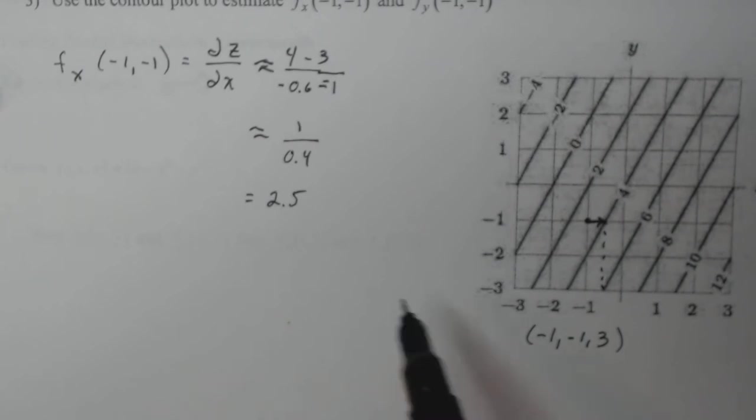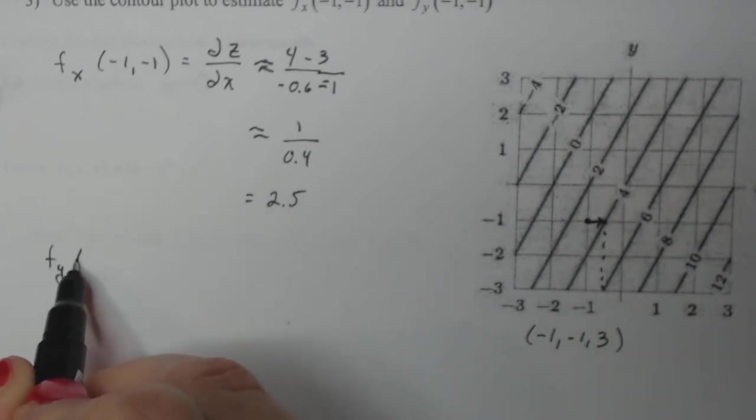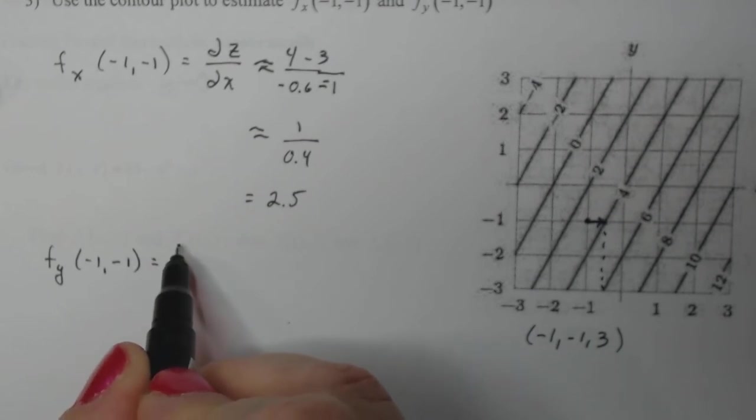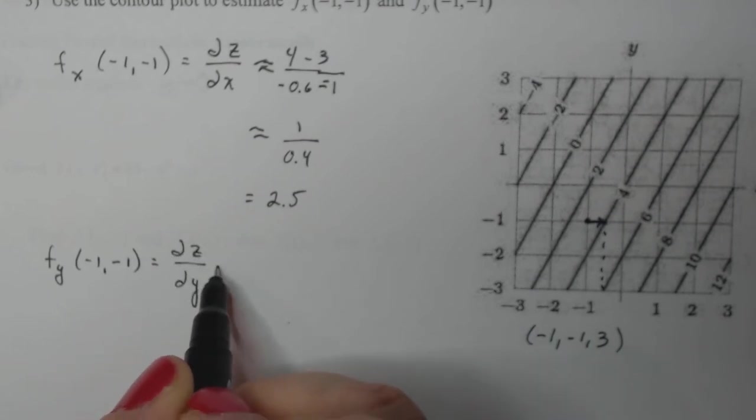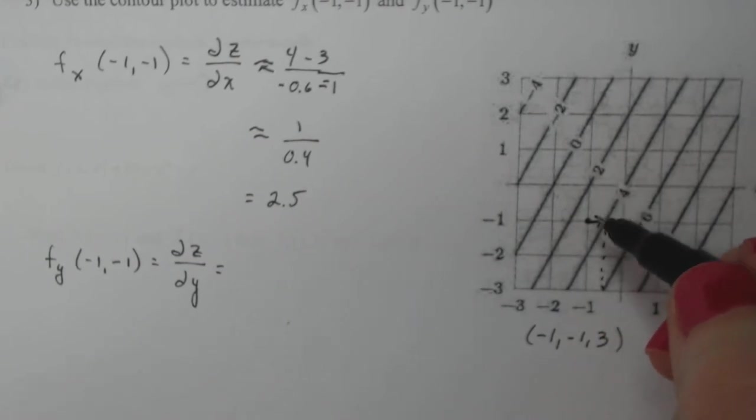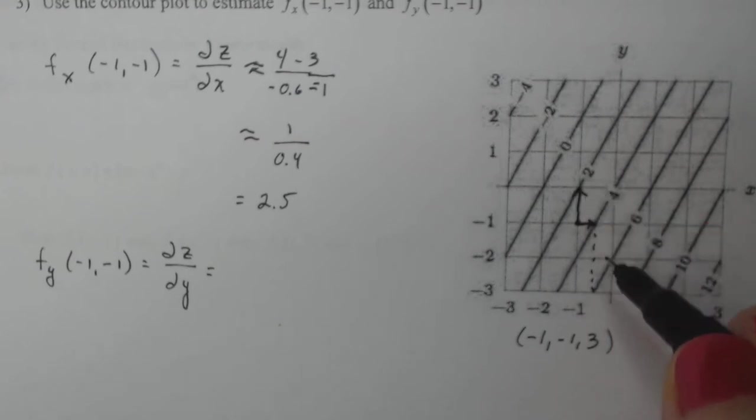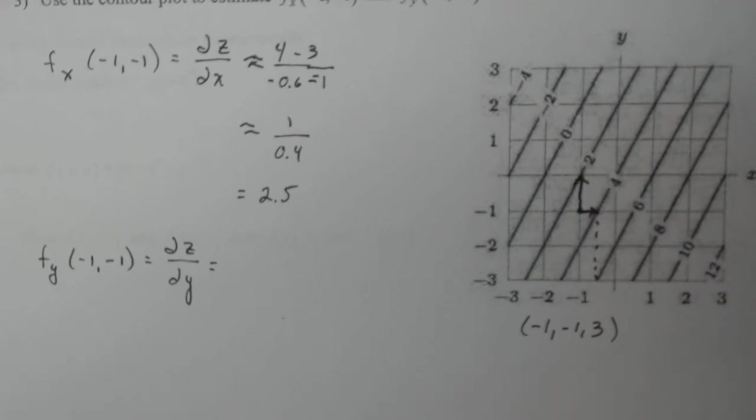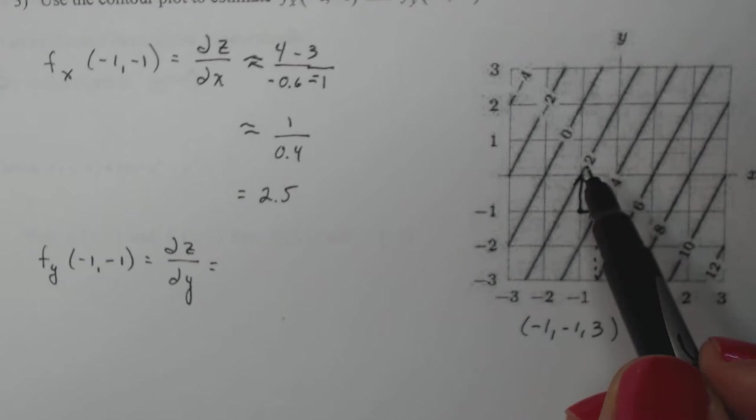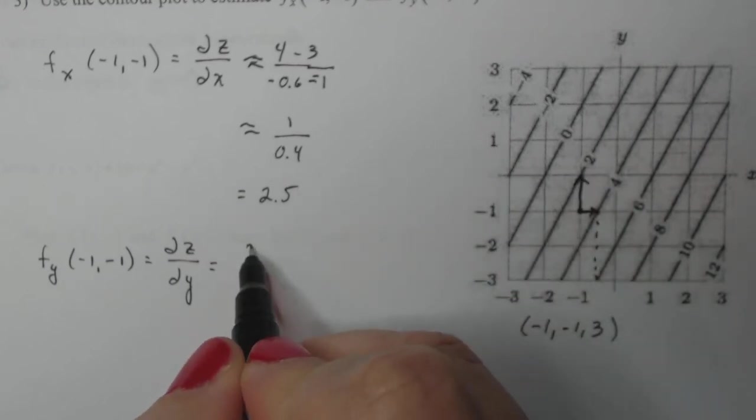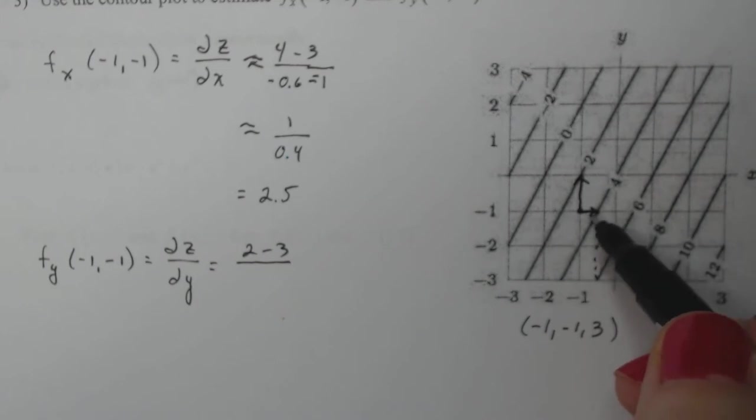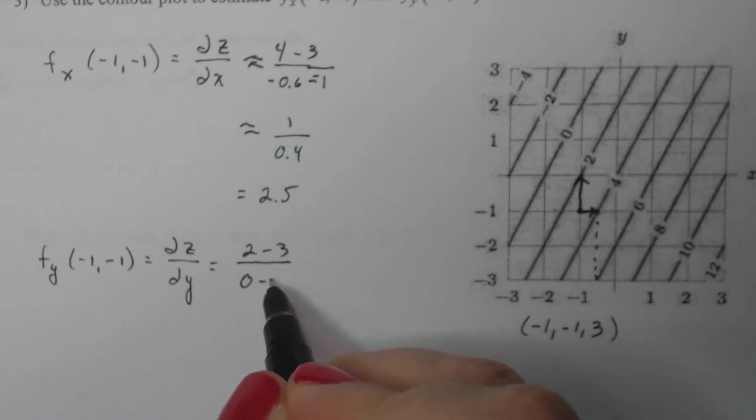So let's do something similar for the y. So f sub y at negative one, negative one, is a change in z with respect to y. So now I'm going to start at the same point, but now I'm going to move upward, parallel to the y axis to the next contour. It's a little further away, but again, we're estimating. We can't make small changes because there's not enough information. So my change in z, I ended at two, I started at three. So that's going to be two minus three. So my y value started at negative one and ended at zero. So I'm going to do zero minus negative one.